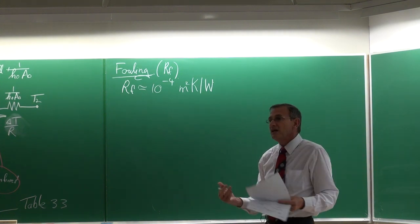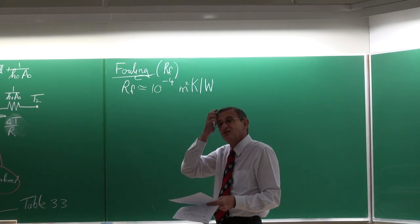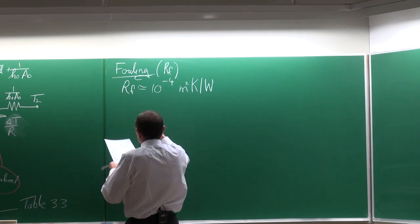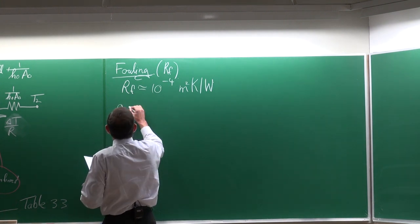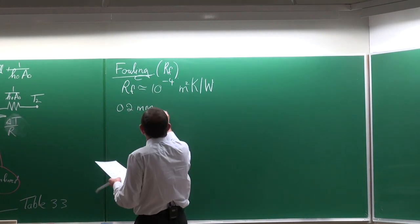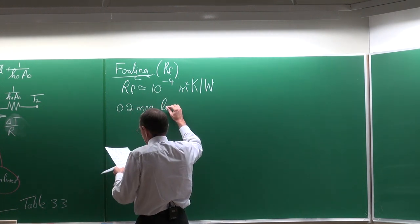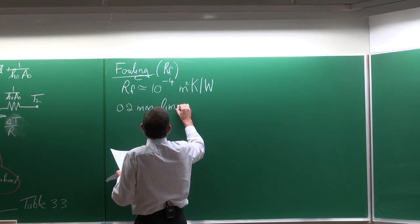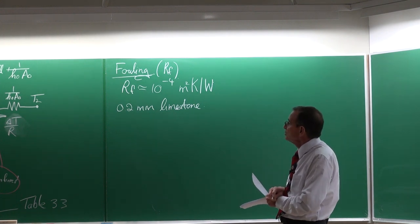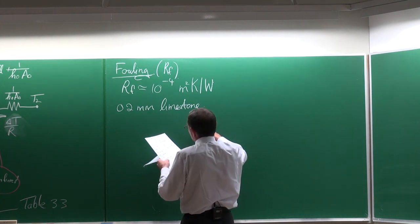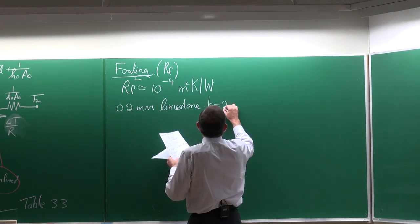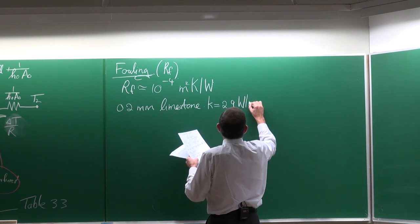These values can be difficult to understand in isolation, but if you do some calculations you can show that a typical scaling thickness of 0.2 millimeters of limestone — with a K value of 2.9 watts per meter Kelvin — would give you the same fouling resistance effect.